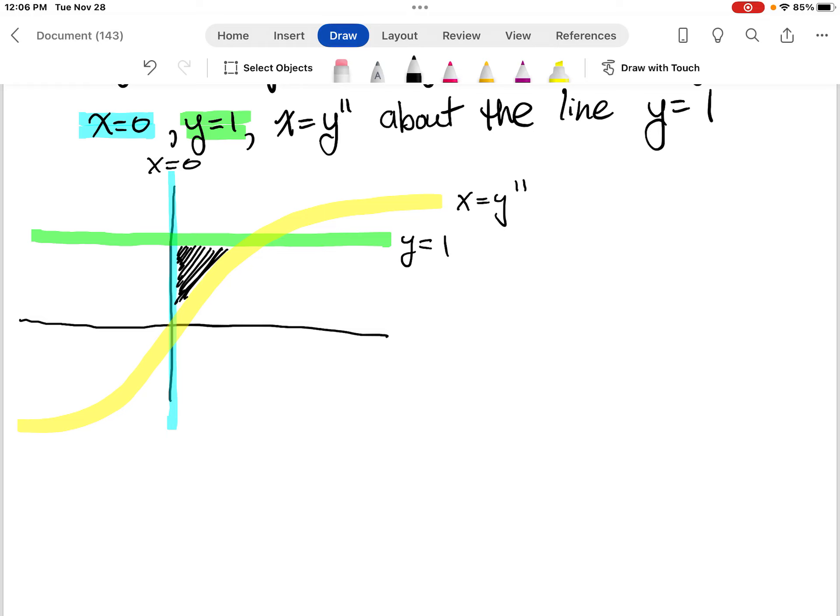and imagine that we spin it around y equals 1. So if we spin it around y equals 1, we're going to get something that looks like this. That doesn't look very good. Hopefully you can picture it.